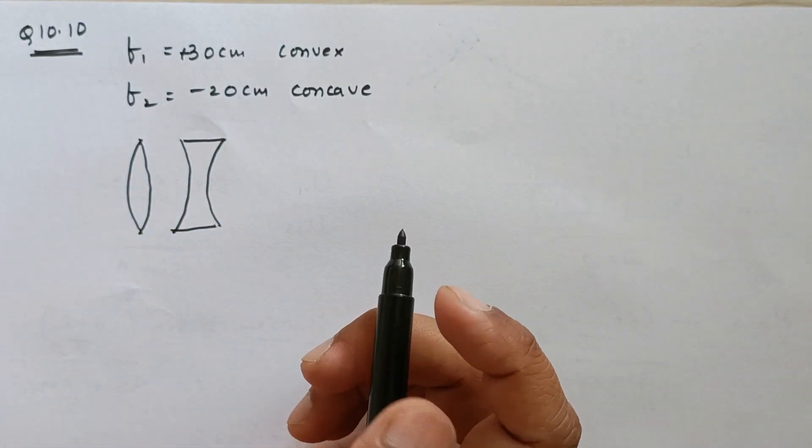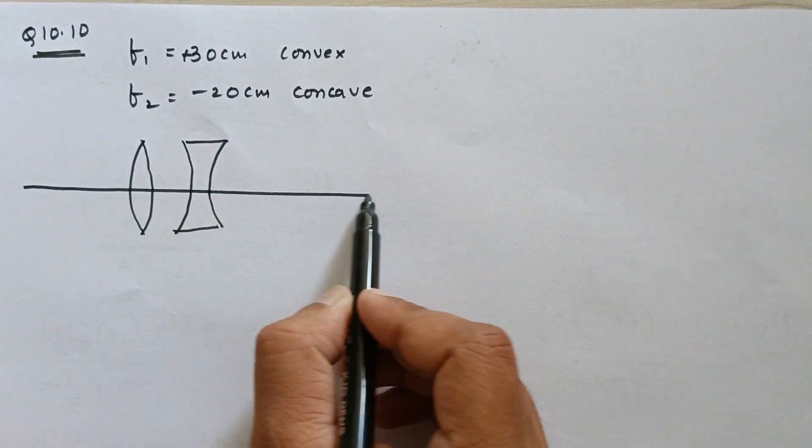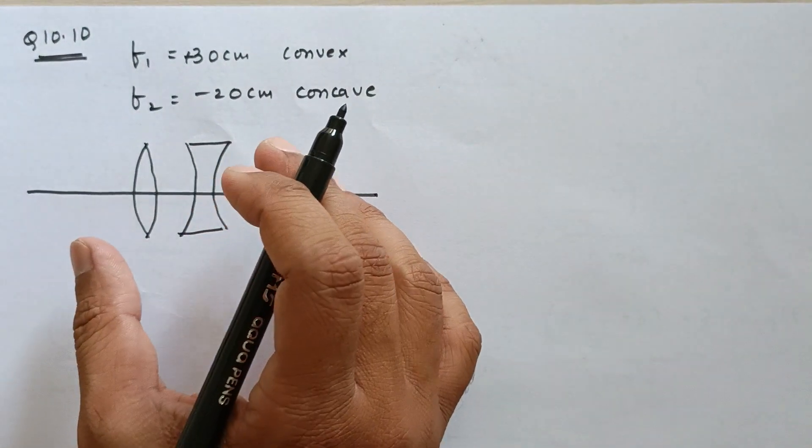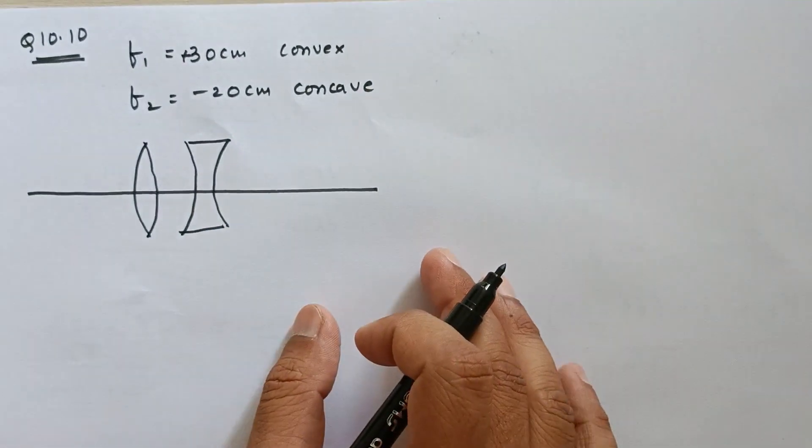These two lenses are in combination, very close to each other. The question asks whether the combination of these two lenses will behave as convex or concave.